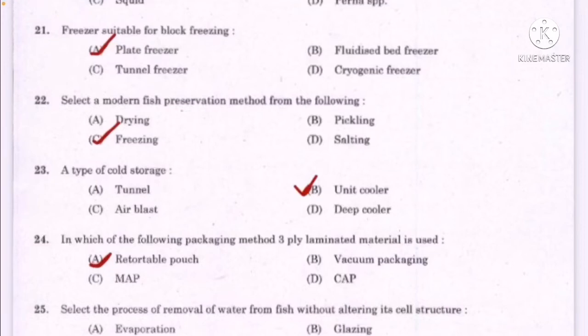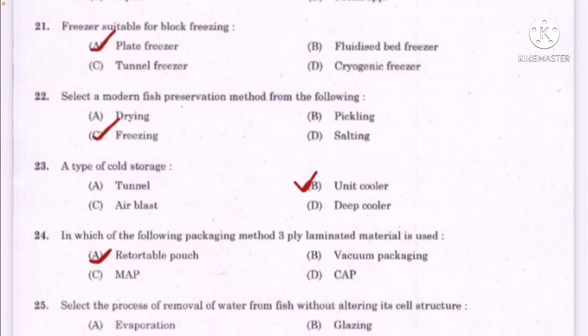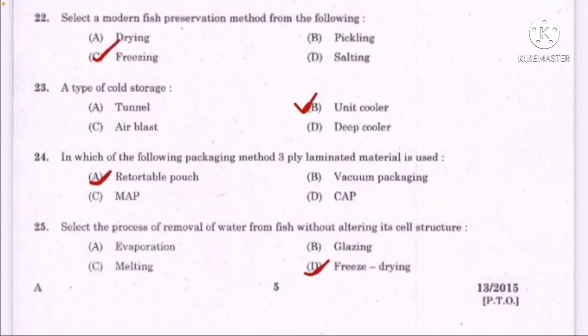A type of cold storage — correct answer option B: unit cooler. In which of the following packaging methods is 3-ply laminated material used — correct answer option A: retortable pouch. Select the process of removal of water from fish without altering its cell structure — correct answer option D: freeze drying.